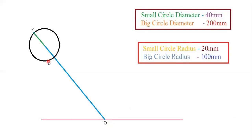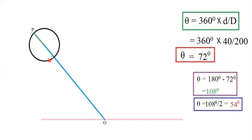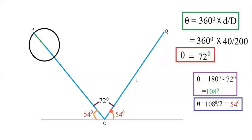OQ will also be 100 mm, because both OP and OQ are the big circle radius. The suspended angle will be 72 degrees as explained before — subtracting 54 and 54 from 180 gives this result.